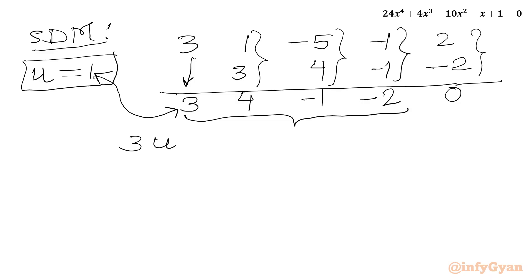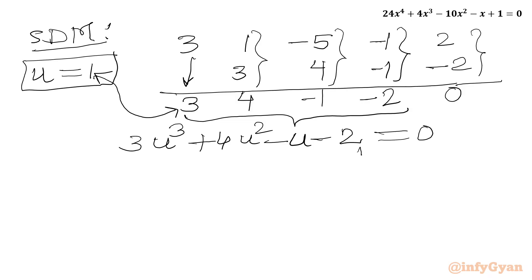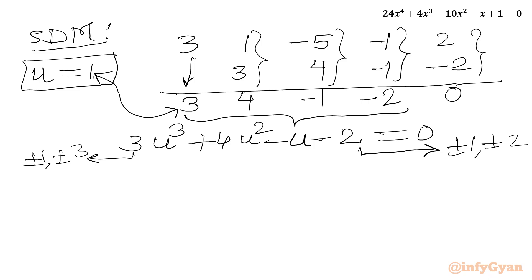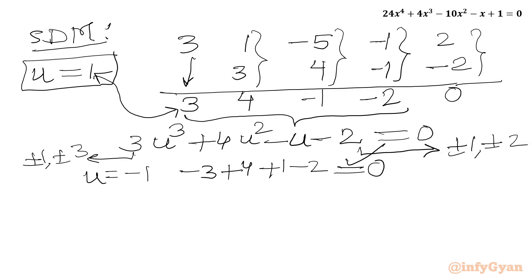We can write the cubic as 3u³ plus 4u² minus u minus 2 equal to 0. Using the rational root theorem, eligible factors are plus minus 1, plus minus 2; leading coefficient gives plus minus 1, plus minus 3. Plugging in u equal to 1 does not satisfy it. Trying u equal to minus 1: minus 3 plus 4 plus 1 minus 2 equals 0. Yes, it is satisfying our equation. So u equal to negative 1 is our second base solution.